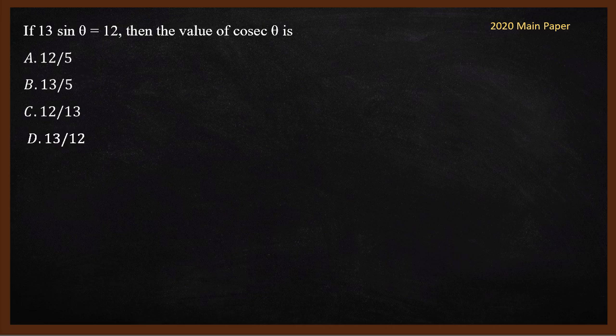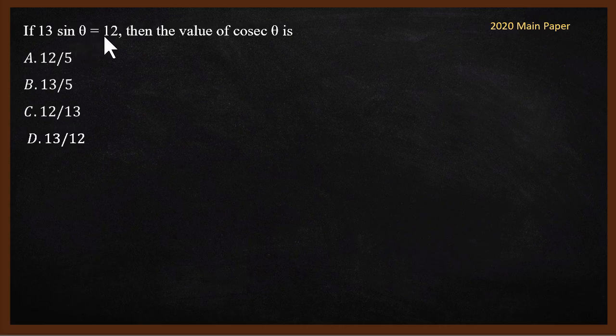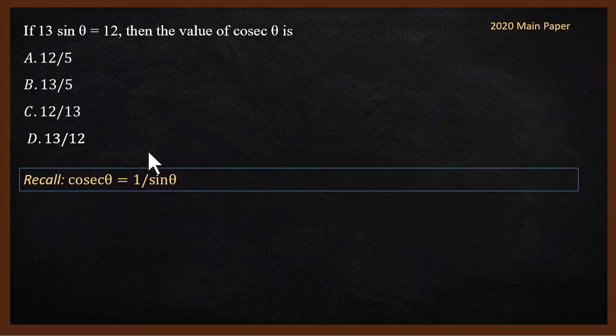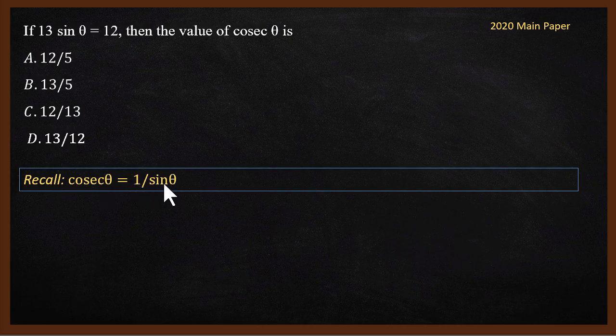Trigonometry. Here, 13 sin θ = 12. If 13 sin θ = 12, then value of cosecant θ is what? This is 2020 main paper. How do you solve this question? You have to solve this by remembering cosecant θ = 1/sin θ. So what is sin θ?